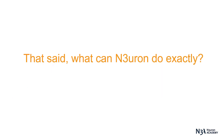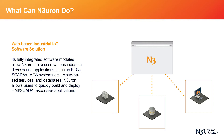What can Neuron do exactly? Using web-based communication technologies, Neuron software modules provide access to a wide variety of industrial devices, cloud-based services, databases, SCADA, MES, and ERP systems. This capability, along with its visualization tools, allows users to create powerful application solutions that can be used to monitor, control, and historize information regarding their industrial processes.